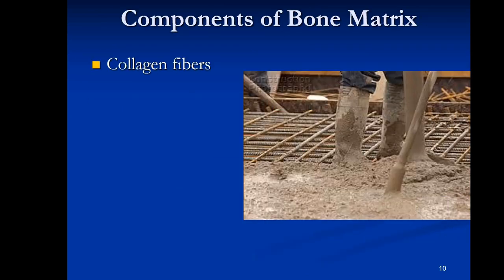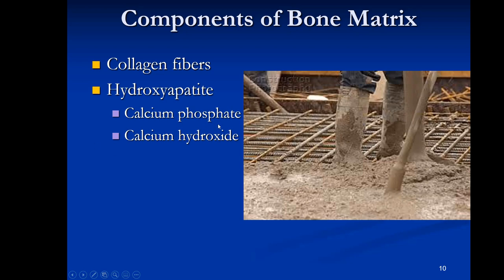The bone matrix consists of collagen fibers and minerals — calcium and phosphorus. Together, calcium phosphate and calcium hydroxide form a mixture known as hydroxyapatite. A good analogy is pouring a concrete slab: iron rebar is placed first for strength, then concrete is poured over it. Similarly, collagen fibers are equivalent to the rebar, giving bone its strength, while calcium and phosphate give bone its hardness. When bone hardens, this process is called calcification.